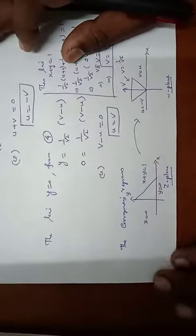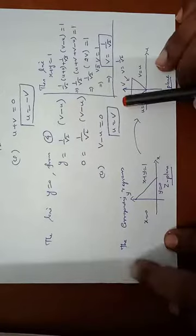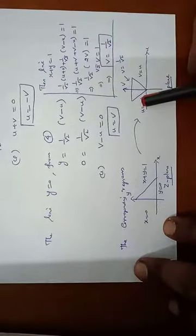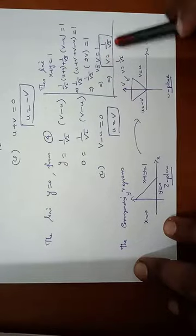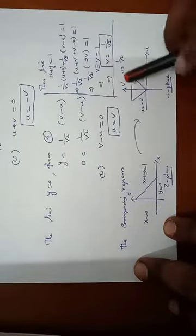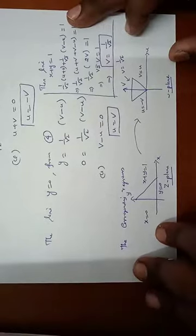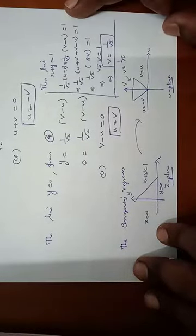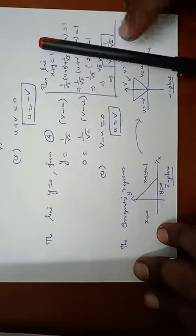Finally, we draw the diagram. The z-plane region is bounded by x = 0, y = 0, and x + y = 1 (a triangle). Mapping to the w-plane gives: u = −v (left side), u = v (right side), and v = 1/√2 (top), forming an upper triangle. This problem is very important for the Anna University open book examination under the 2017 regulation.